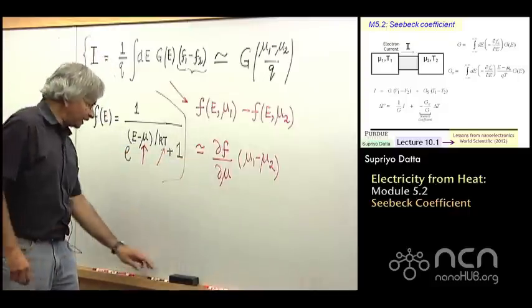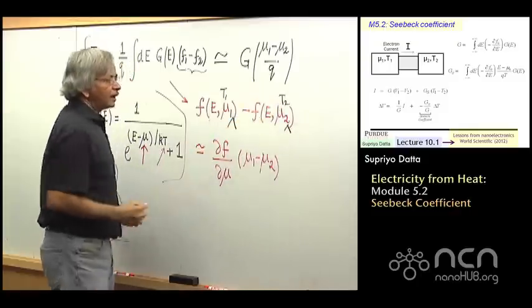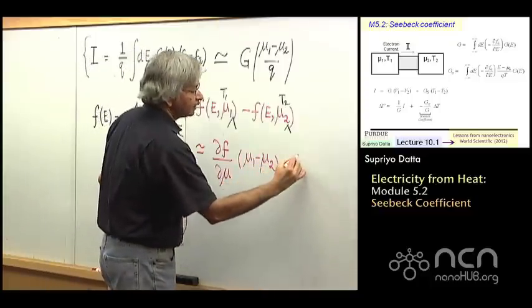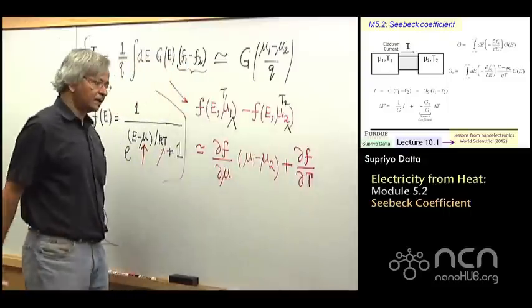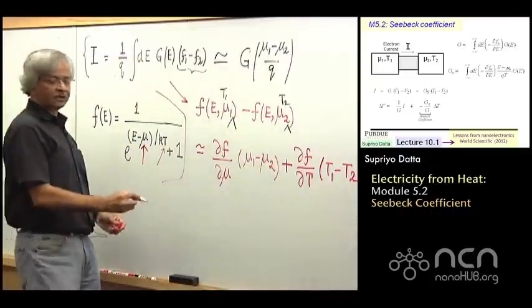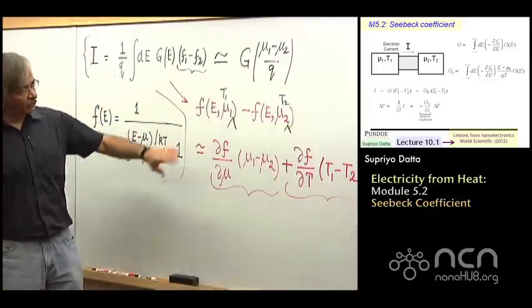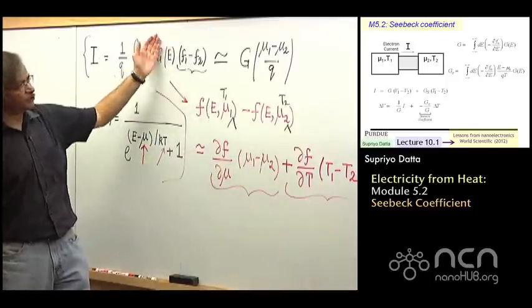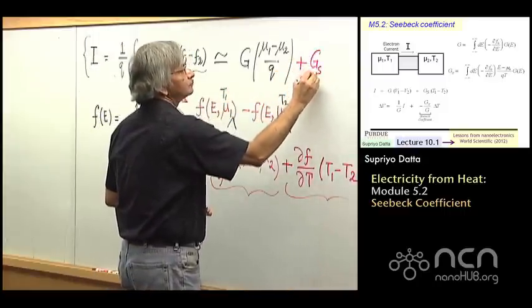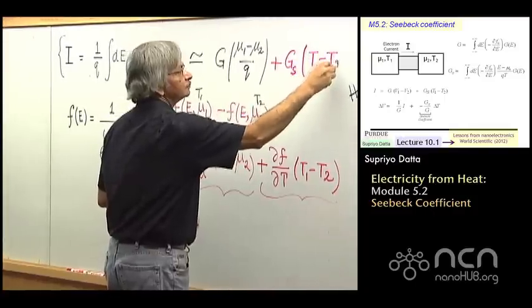So this is what we have done earlier. Now, what we have is an additional thing which is the temperature. So you have a T1 here and a T2 there. And we could accommodate that in this discussion simply by adding another term which looks like ∂F/∂T times T1 minus T2. So this is what we have done earlier. And now we are adding this extra term there.